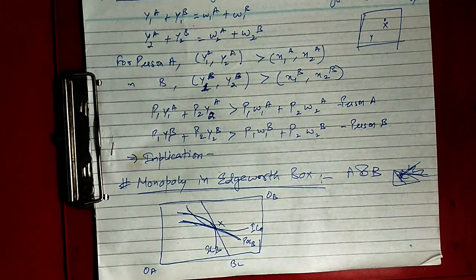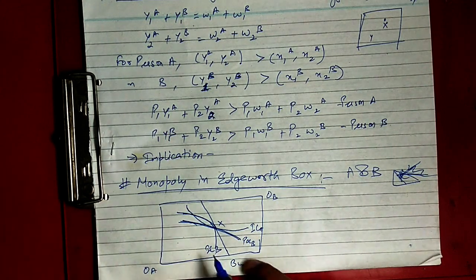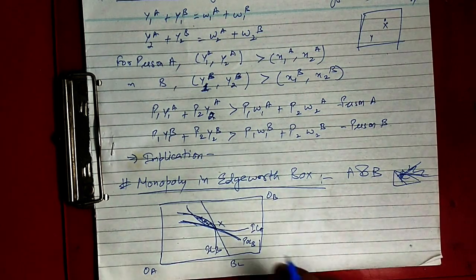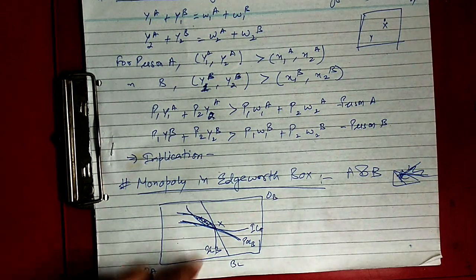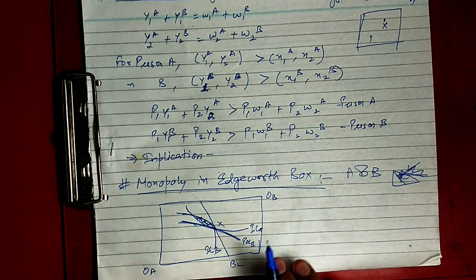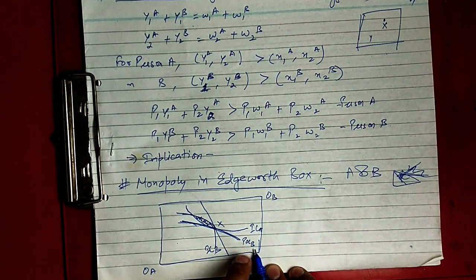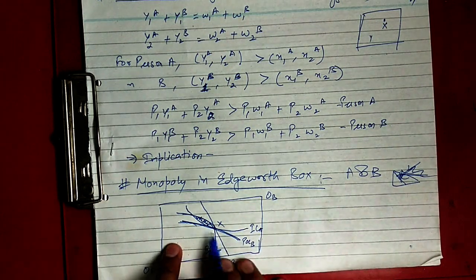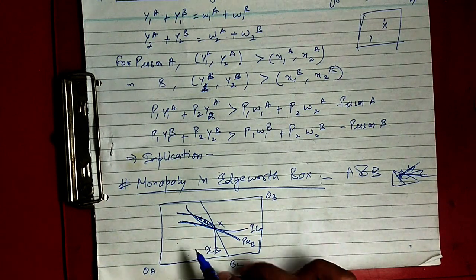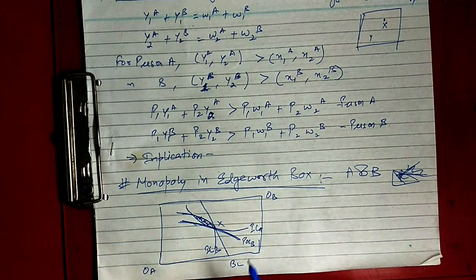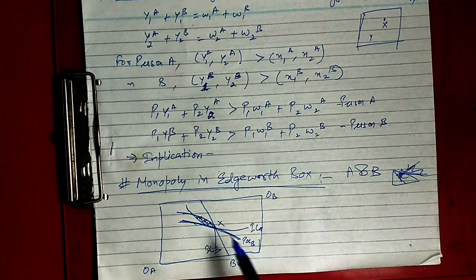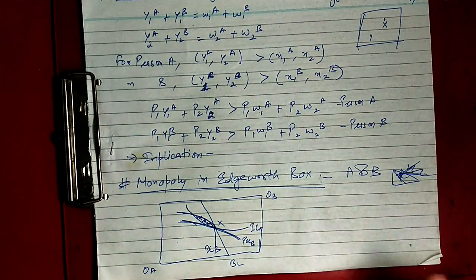At the monopoly allocation point x, ICa is not tangent to ICb — a lens-shaped region is created between the two indifference curves. Whenever a lens appears, it means the allocation is not Pareto efficient. The monopolist has maximized his utility using known POC of B, but a lens region indicates a breakdown of Pareto efficiency. The allocation at x is Pareto inefficient.